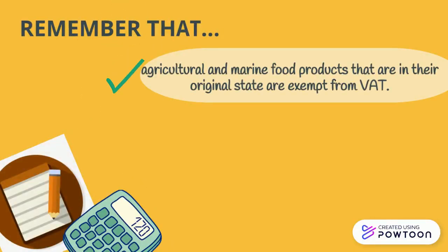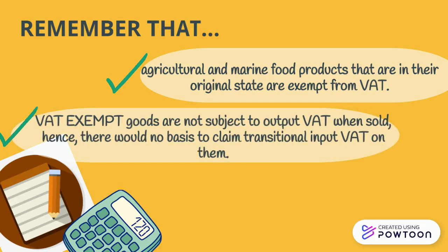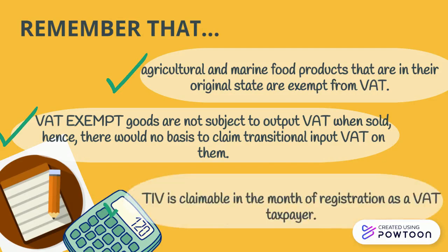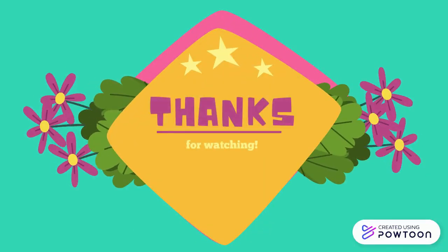To remember: agricultural and marine food products that are in their original state are exempt from VAT, and VAT exempt goods are not subject to Output VAT when sold — hence, there would be no basis to claim Transitional Input VAT on them. Lastly, it is claimable in the month of registration as a VAT taxpayer. And that's the end of my presentation. Thanks for watching.